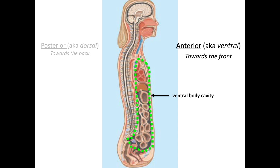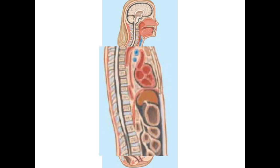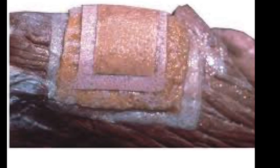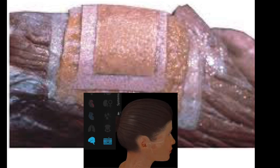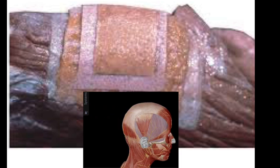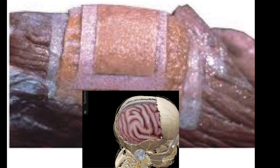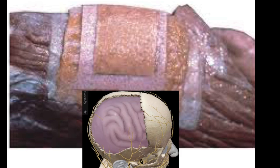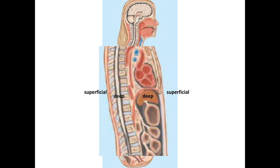The last pair I'm going to mention here is superficial and deep, which comes up quite often in terms of layers of muscles and blood vessels. The most superficial region of your body is the skin. As you go deeper, you're going to pass through successive layers of connective tissue, muscle, and then possibly bone, and then the organs within those body cavities.